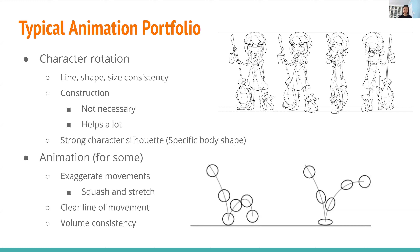Not all animation portfolios require you to do actual animation, but for some there are. It's good to exaggerate movements, like squash and stretch. For example, on the image on the right, the ball is squashed, and there should be a clear line of movement and volume consistency. So if you squash the ball, the volume should still stay consistent — it should be wider when squashed.